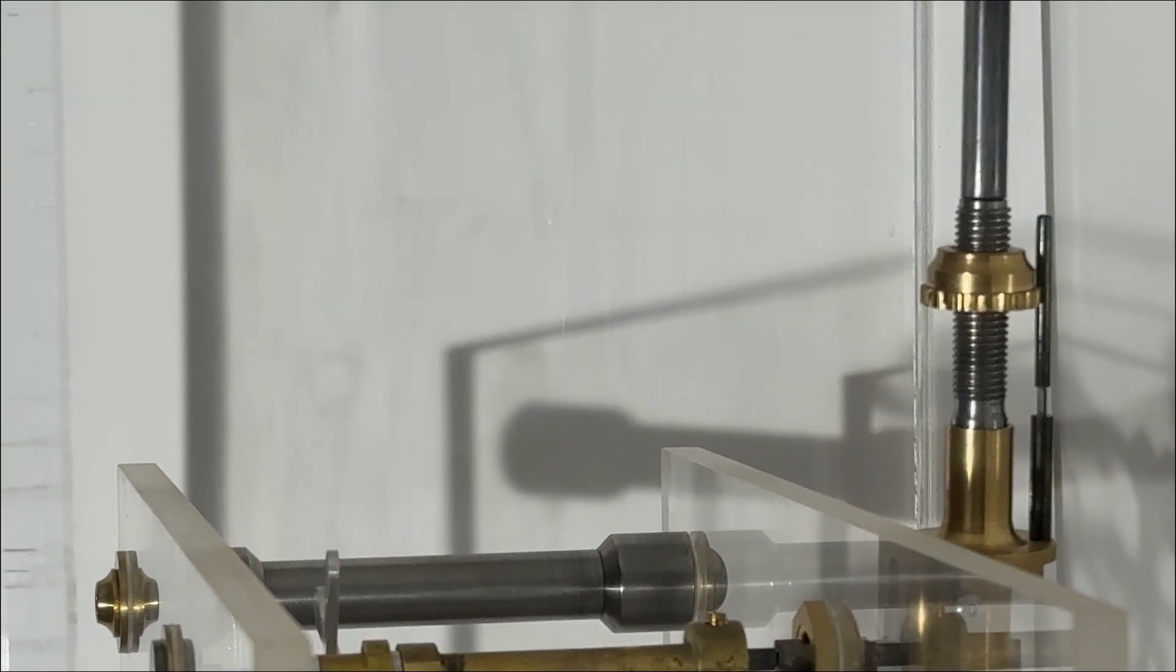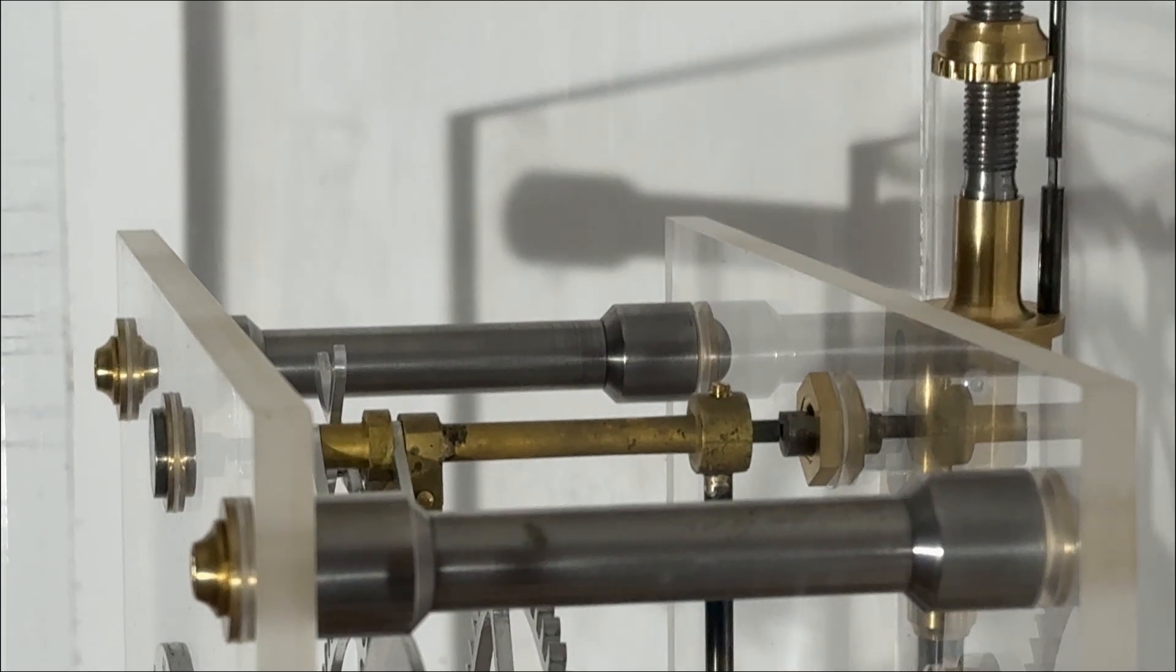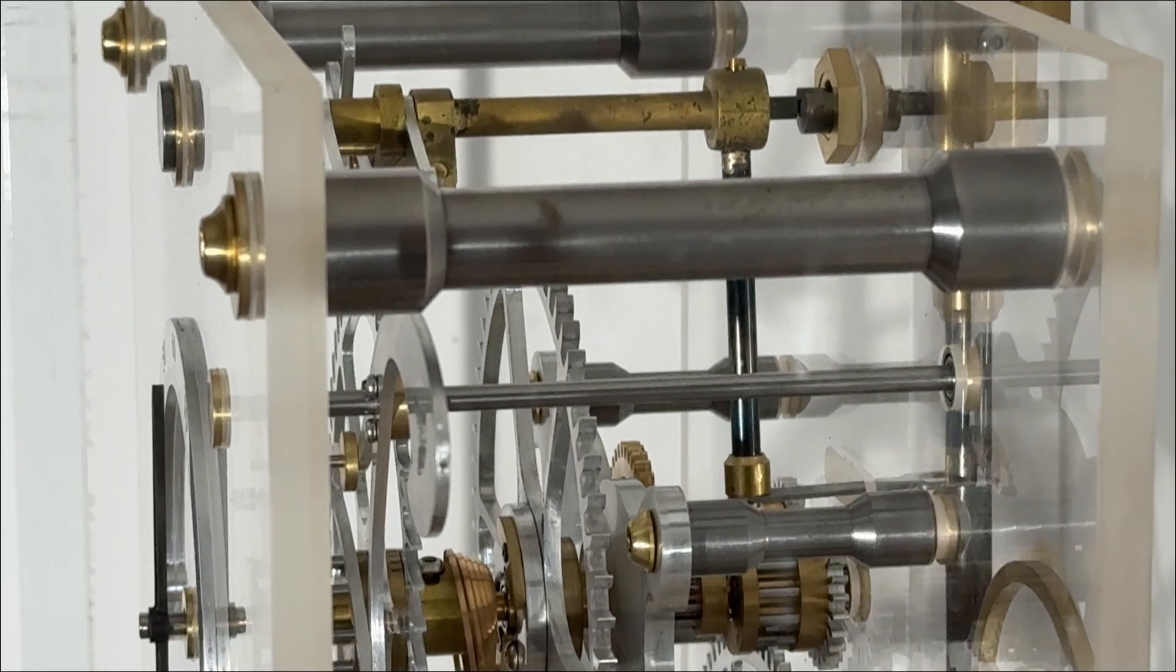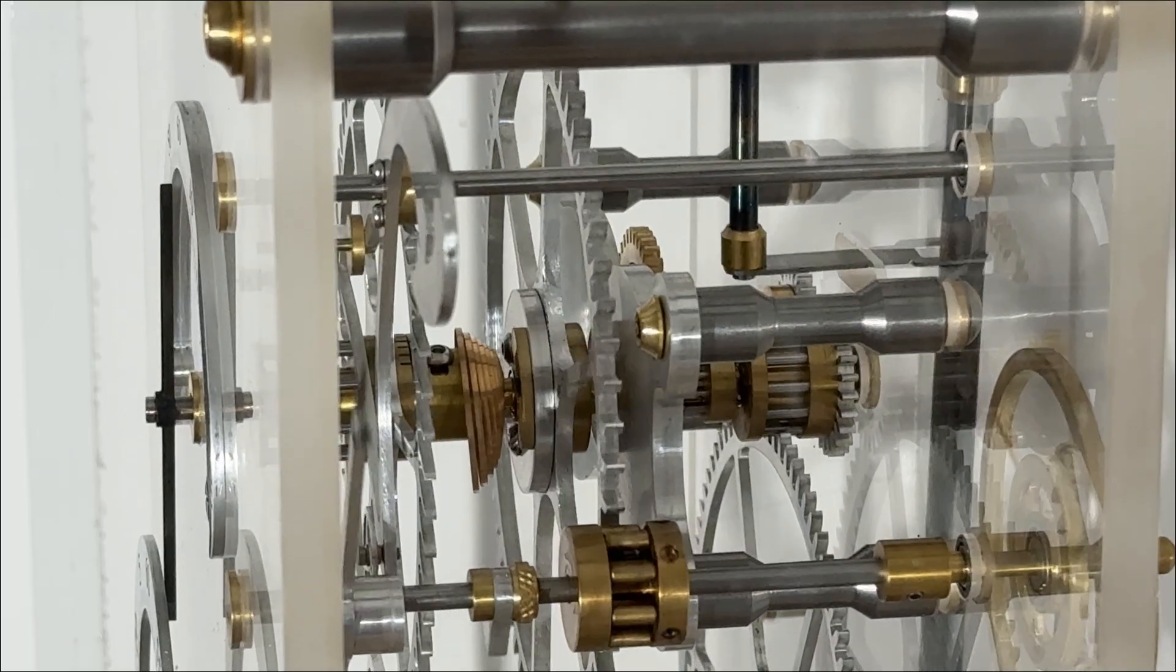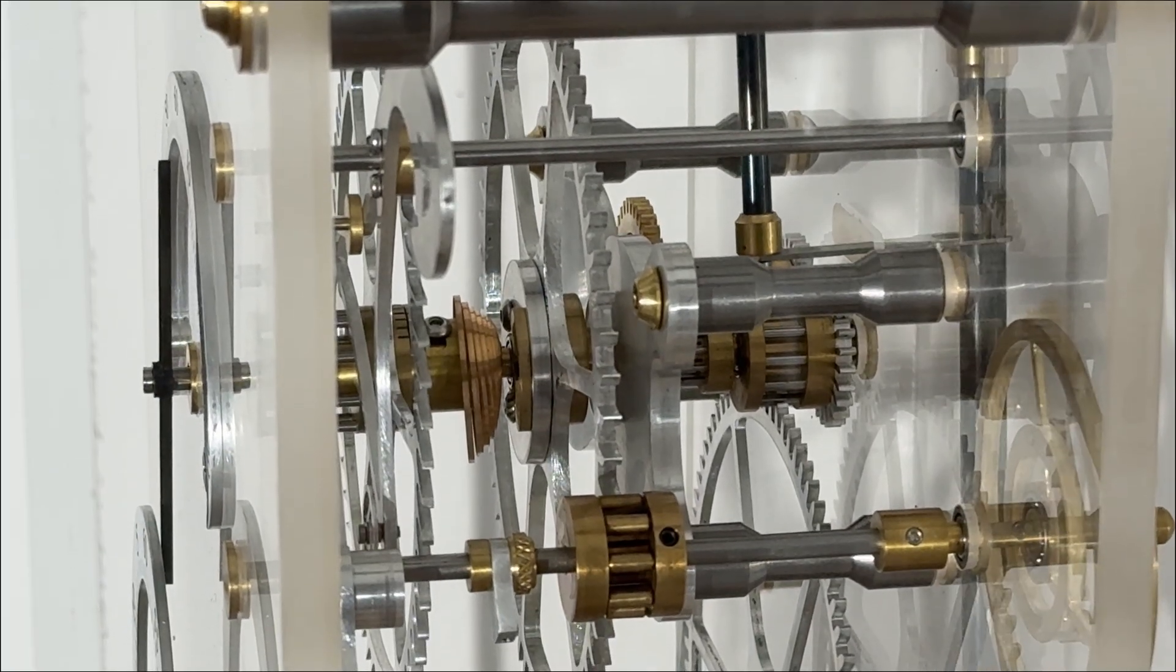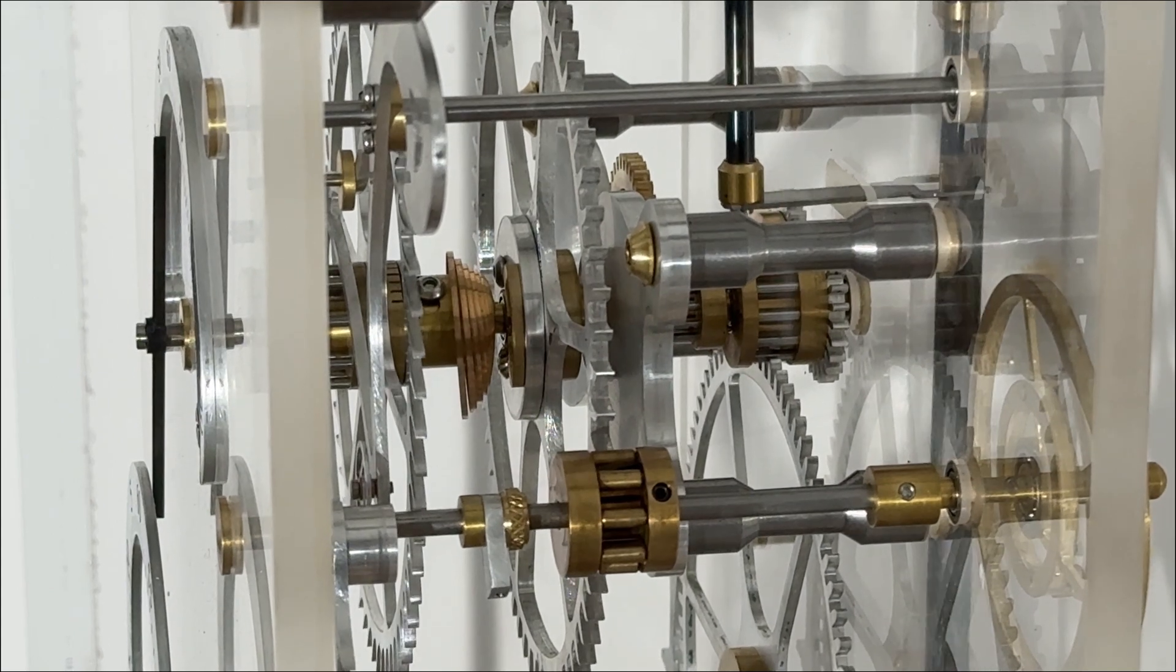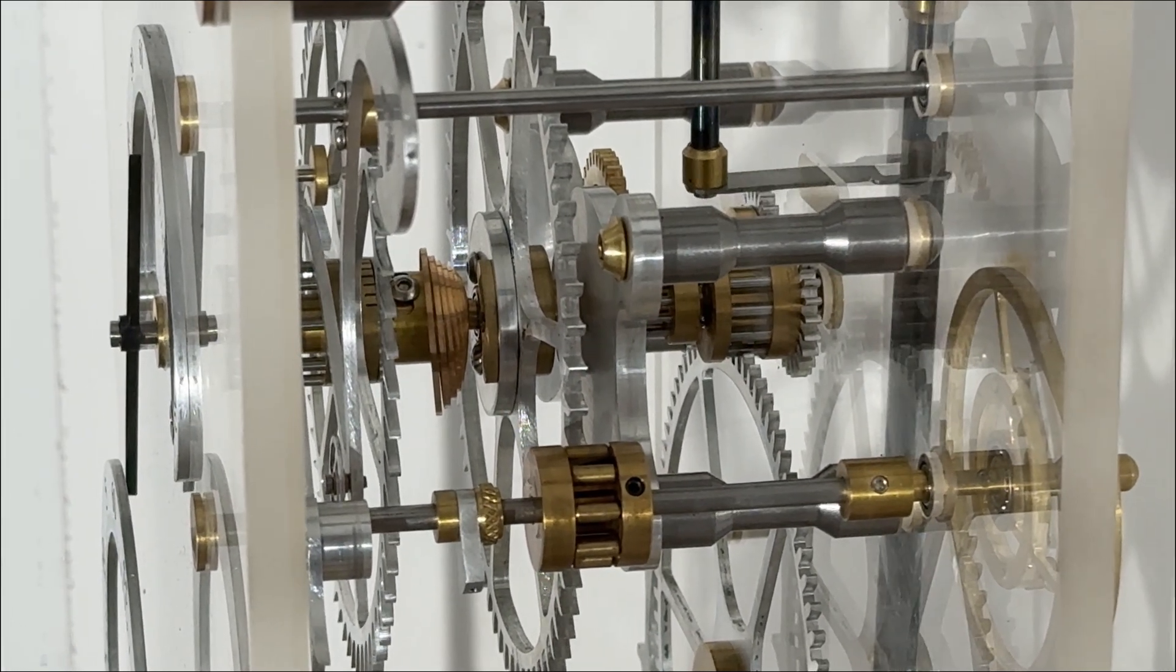So starting at the top of the clock you've got the rating nut on the pendulum and moving down you can just see the grasshopper operating and its crutch attaching it to the pendulum and then you can see the remontoir spring, the copper colored spring, and the remontoir wheel was just triggered then and gearing leading down to the hour wheel and in the foreground the roller pinion which operates on the remontoir wheel.